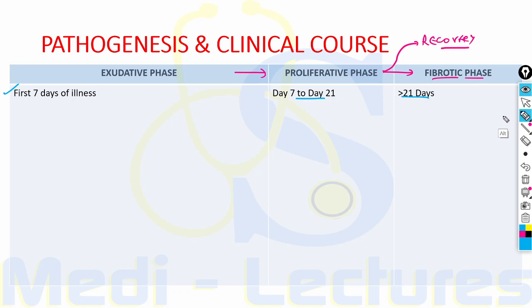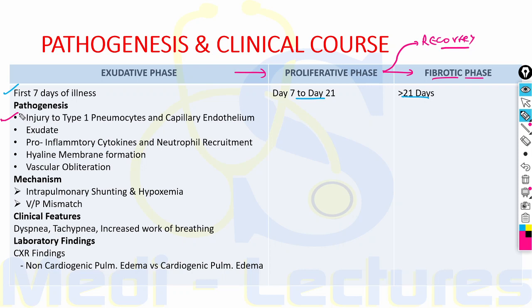In the exudative phase, there is injury to type 1 pneumocytes and capillary endothelium. This leads to loss of the tight alveolar barrier to fluid and macromolecules, causing collection of protein-rich exudative fluid in the interstitium and alveolar spaces. Pro-inflammatory cytokines including IL-1, IL-8, TNF-alpha, and leukotriene B4 are formed, leading to neutrophil recruitment. Finally, hyaline membranes composed of condensed plasma proteins, cellular debris, and dysfunctional pulmonary surfactant form in the alveoli.